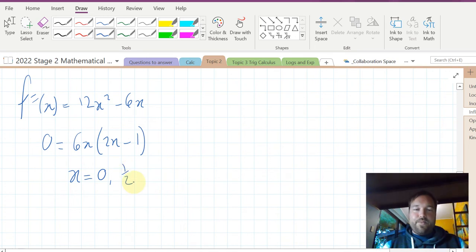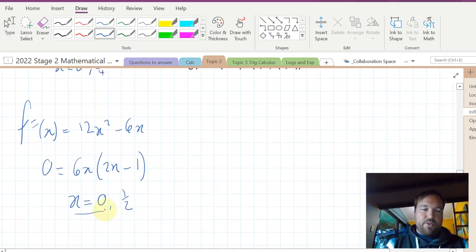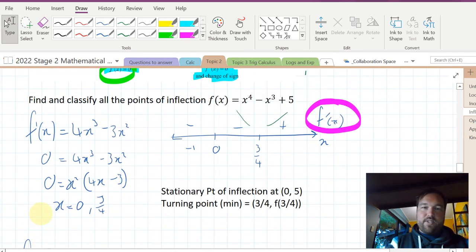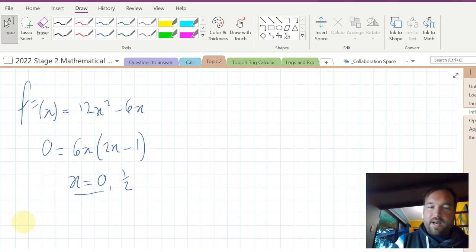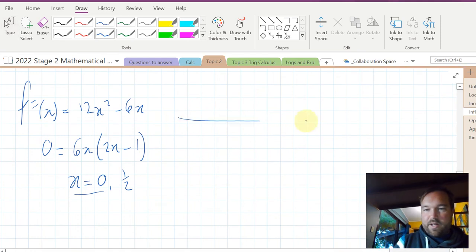Now, the first zero isn't surprising, because we already strongly suspect there is a stationary point of inflection here. The half, though, is more interesting. So we draw a sign diagram for x, for f''(x). And we are looking at the point zero and a half.